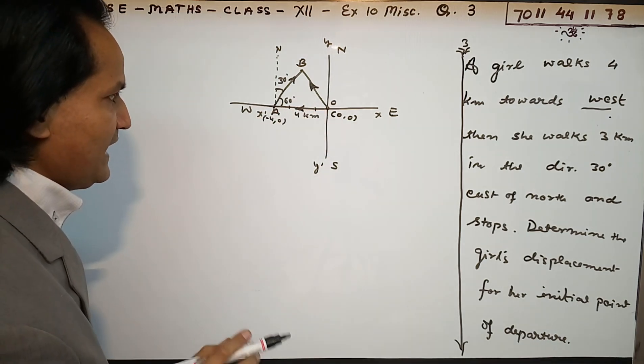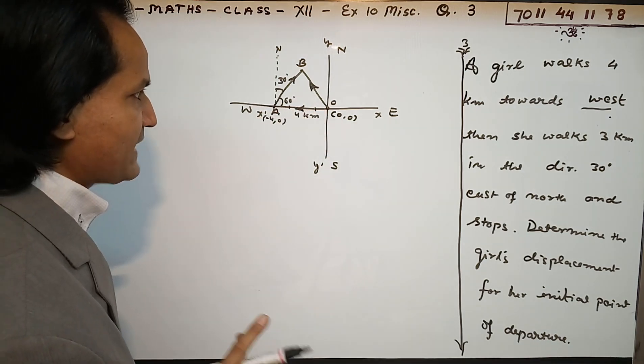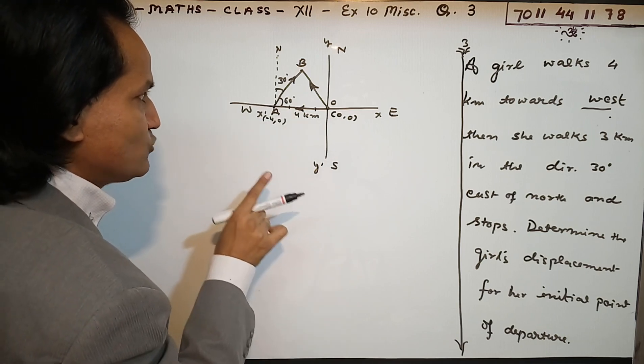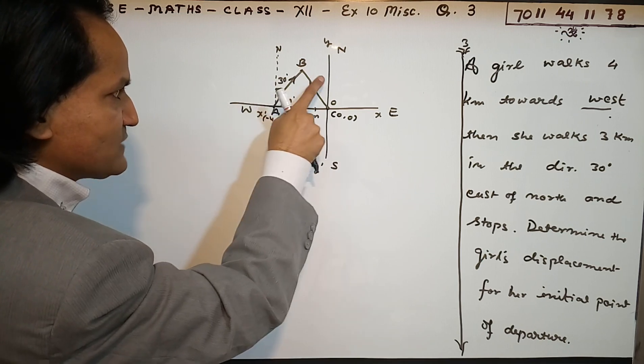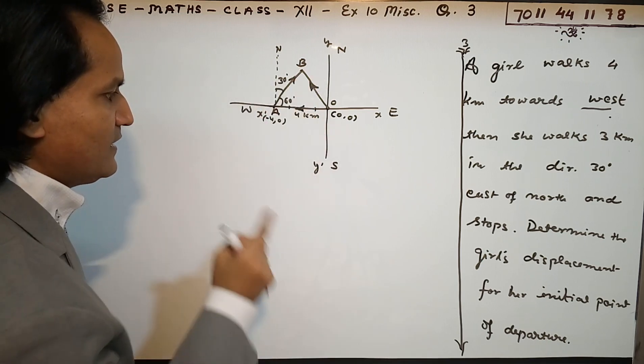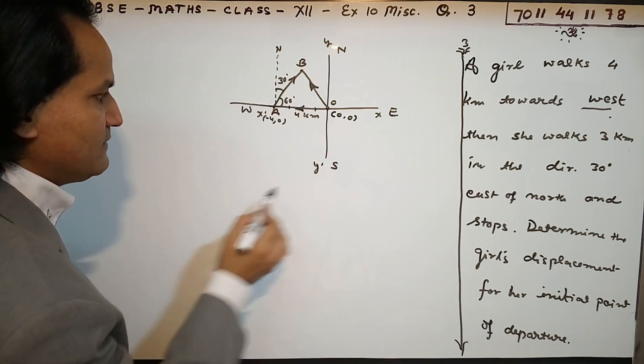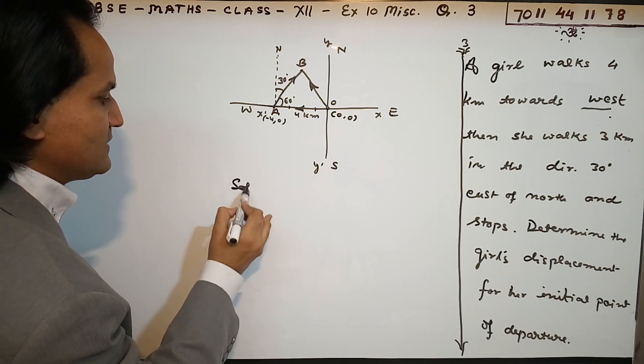Addition law will be applied here - the triangle law that we studied in vectors initially. That will be applicable here. This one and this one plus will equal this. So let's start the solution now.